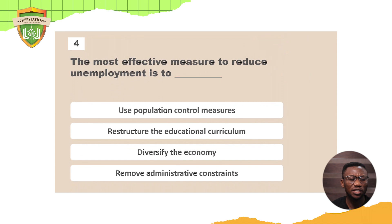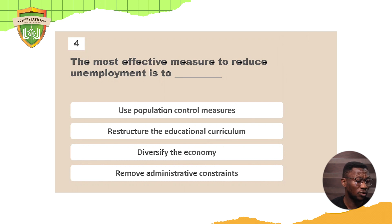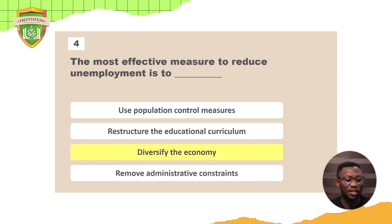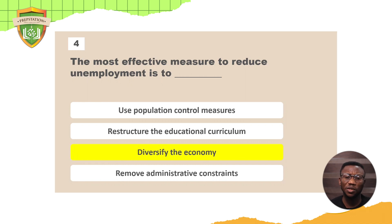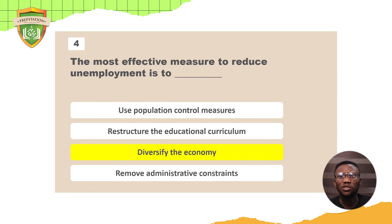Question four: the most effective measure to reduce unemployment is to — use population control measures, restructure the educational curriculum, diversify the economy, or remove administrative constraints? The answer is diversify the economy. When you diversify the economy, like in Nigeria, it means having other sources of income and other businesses the country is running. With that, we can reduce unemployment rates and reduce the number of people not employed.